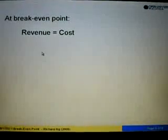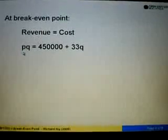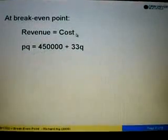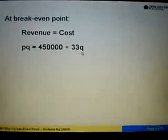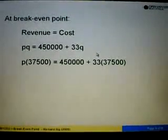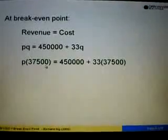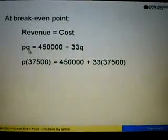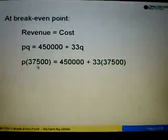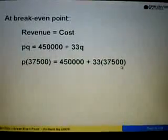At break-even point, revenue is equal to cost. Revenue is PQ, so PQ equals 450,000 plus 33Q. We are told that the quantity for break-even is 37,500. So substitute Q with 37,500: we get P times 37,500 equals 450,000 plus 33 times 37,500.